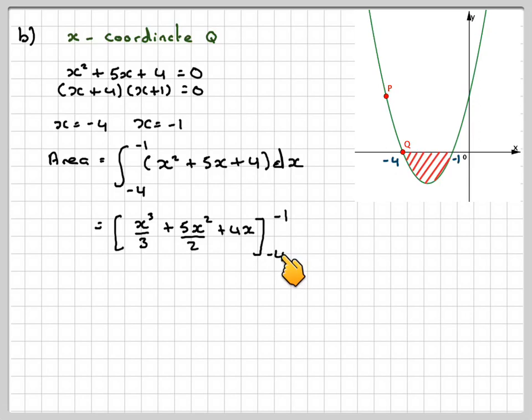You put the upper bound first and then the lower bound. You need to do this with great care in this case, because these are both negatives. There are lots of brackets. So minus 1 cubed over 3 plus 5 times minus 1 squared over 2 plus 4 times minus 1.